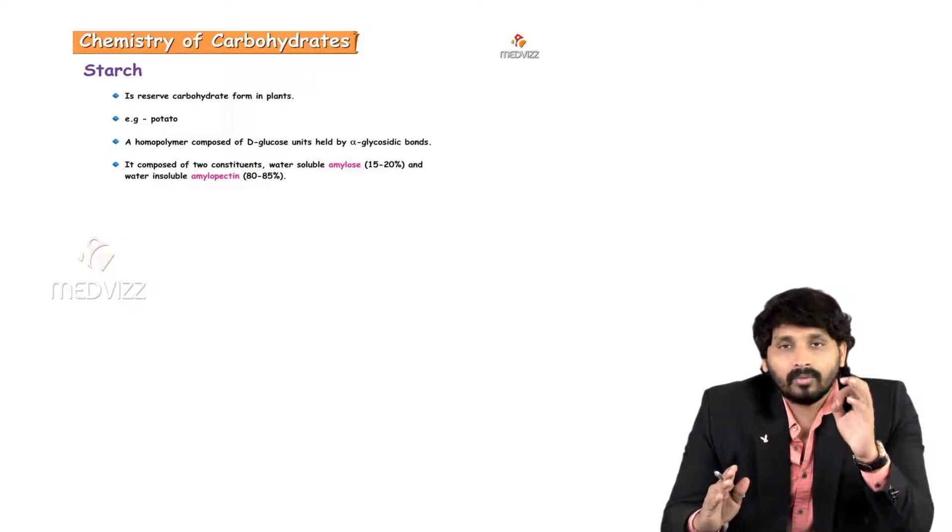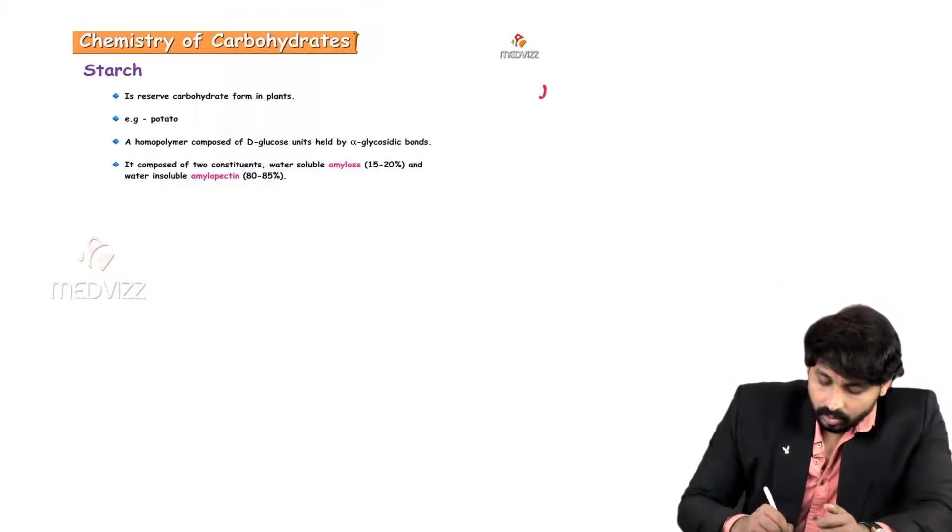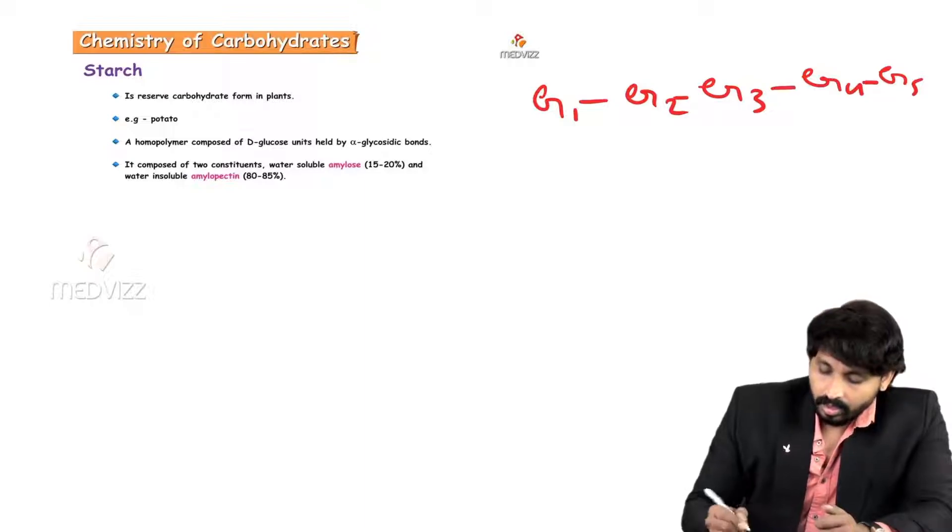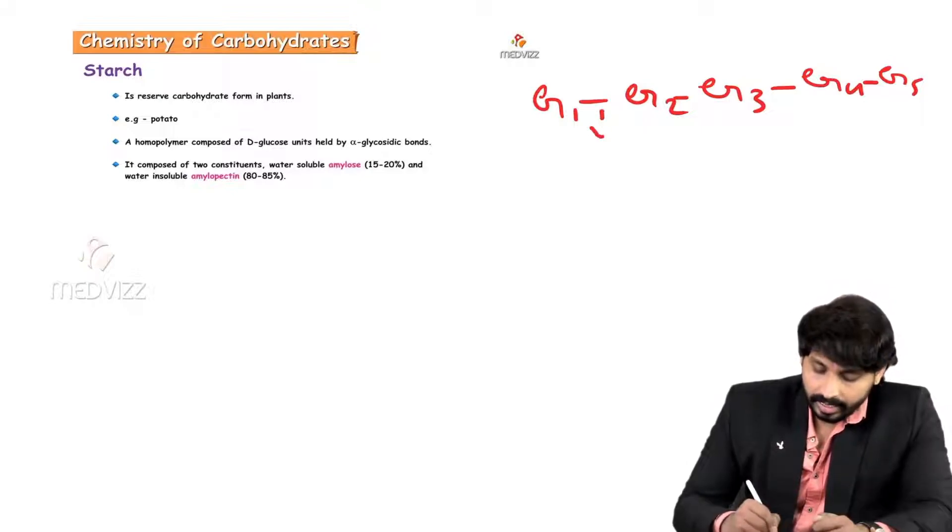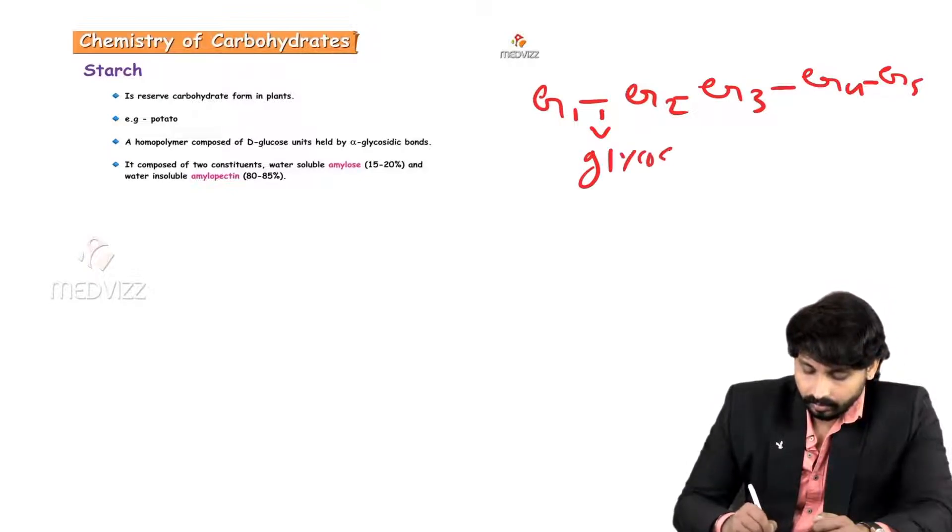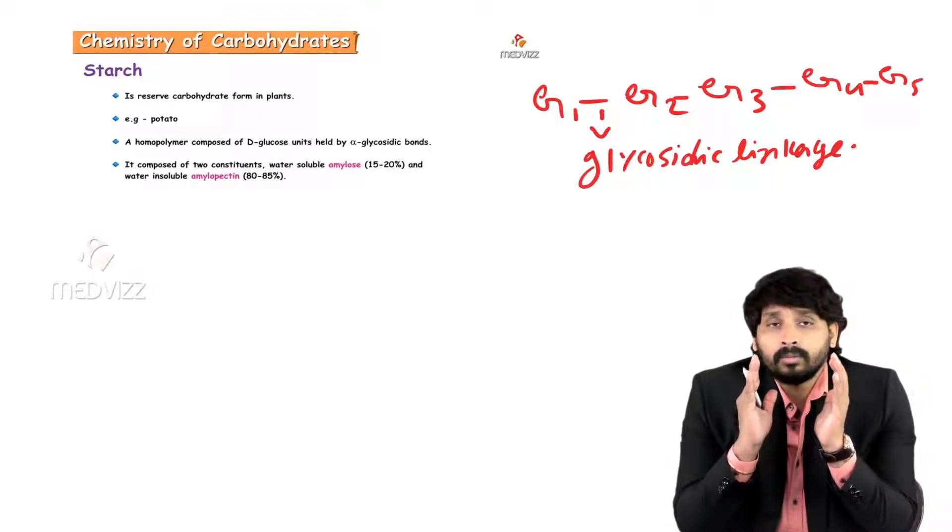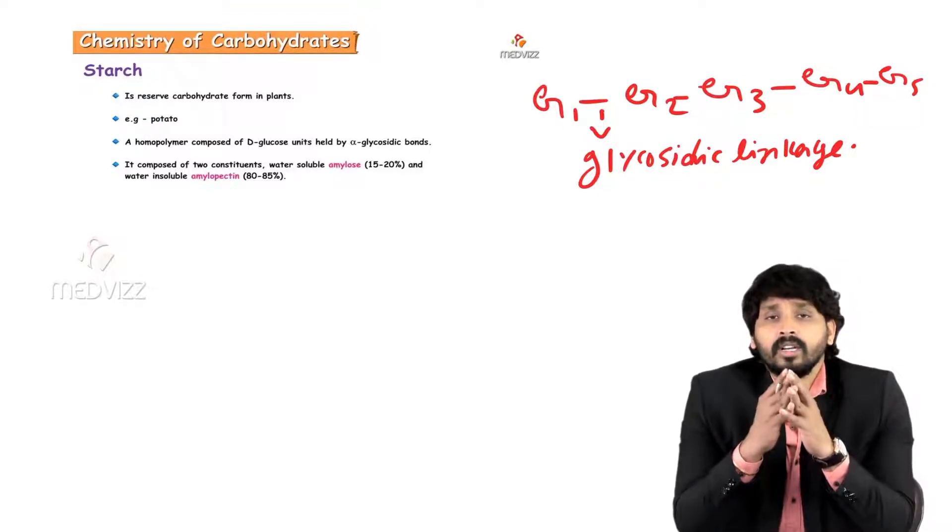What is the composition of starch? Starch is a homopolysaccharide, that means it is made up of repetitive units of glucose. Which glucose? Alpha-D glucose. And the bond is alpha-D glycosidic bond. Here I am showing, all these glucose units held together by glycosidic linkage.